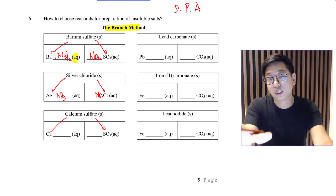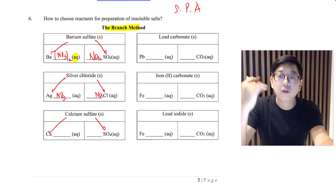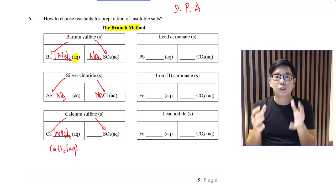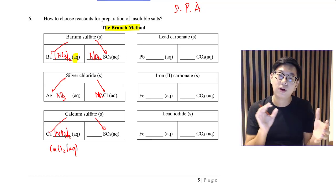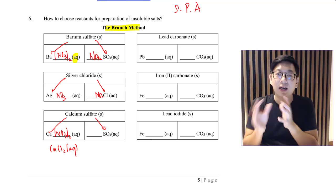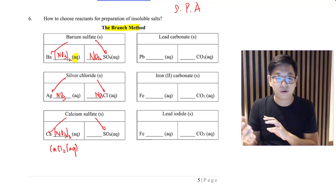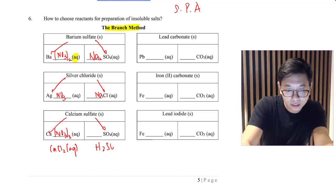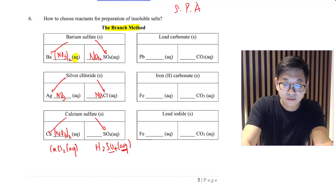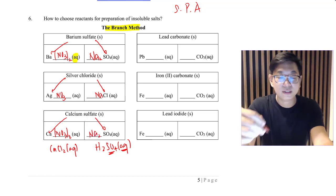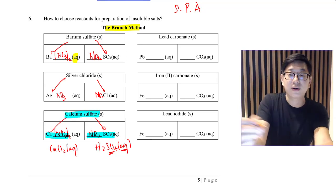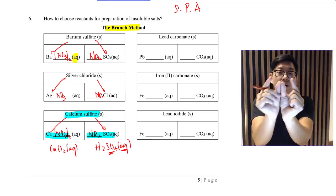For calcium sulfate, branch it out: which calcium salt is soluble? Calcium chloride or calcium nitrate both work. I'll go with calcium nitrate. For the sulfate component, you could use sulfuric acid (H₂SO₄) — that's aqueous and soluble — or stick to the textbook answer of sodium sulfate. So to make calcium sulfate, add calcium nitrate and sodium sulfate — the calcium and sulfate ions meet and form calcium sulfate.